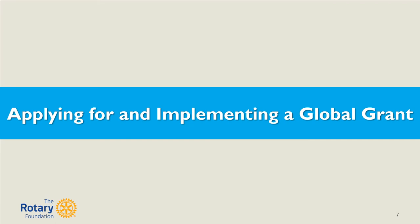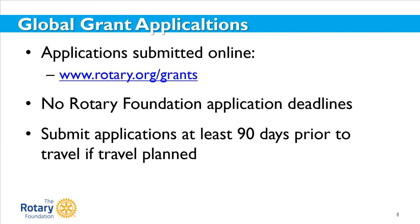Let's talk about applying for and implementing a global grant. You should begin every application by first completing, as much as possible, the global grant application template. Global grant applications are submitted online and the template is accessible by going to www.rotary.org/grants. Applications are accepted on a rolling basis throughout the year and there are no application deadlines.